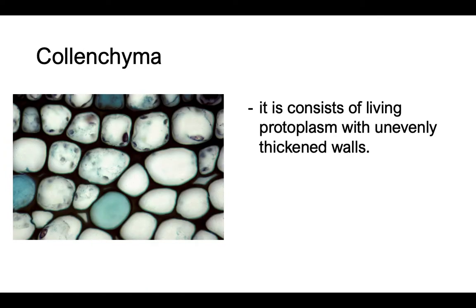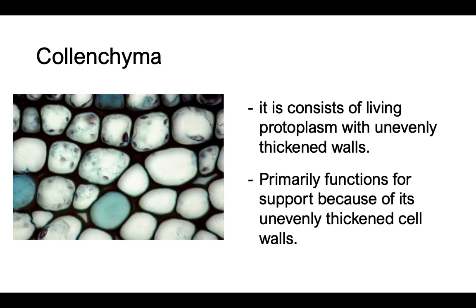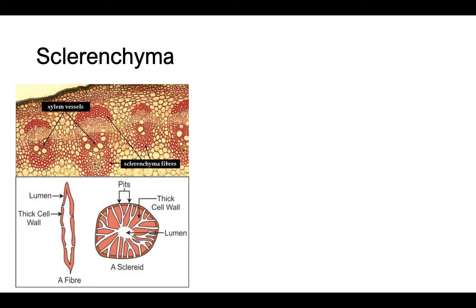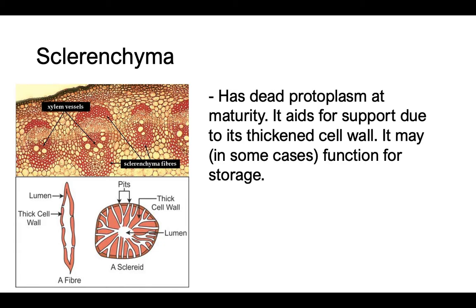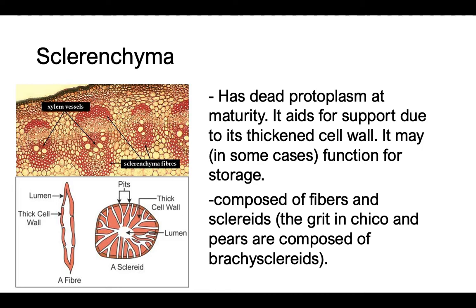Colenchyma consists of living protoplasm with unevenly thickened walls, primarily functioning for support due to those unevenly thickened cell walls. Sclerenchyma has dead protoplasm at maturity and aids support due to its thickened cell wall; it may also function for storage in some cases. It is composed of fibers and sclerids. The grit in chico and pears is composed of a special type of sclerenchyma known as brachysclerids.